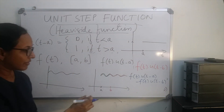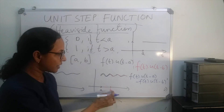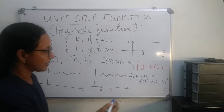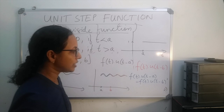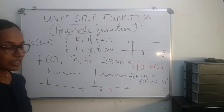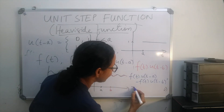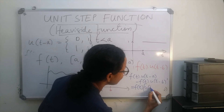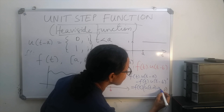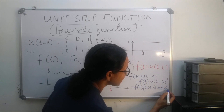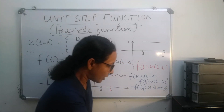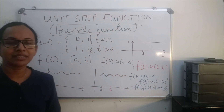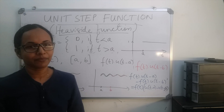So the function defined on the interval [a, b] can be represented with the help of the unit step function as f(t)·u(t − a) − f(t)·u(t − b), which we can write as f(t)·[u(t − a) − u(t − b)]. One application of this representation is in writing a rectangular pulse in a circuit.